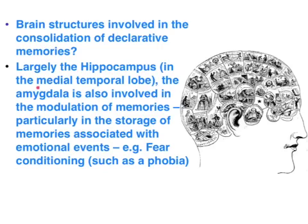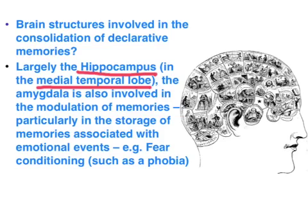The medial temporal lobe is the structure involved in the consolidation of declarative or explicit memories — in particular, the hippocampus. It's important to note that the hippocampus is not the storage site of declarative memories; it's merely involved in the consolidation process. We know this from cases like HM or Clive Wearing, who suffered hippocampal damage and could still retrieve prior long-term memories but were unable to form new declarative memories.